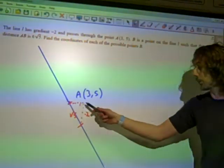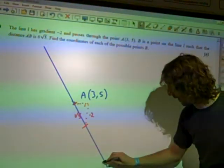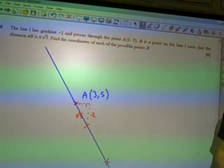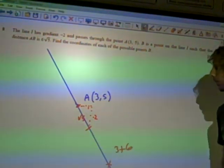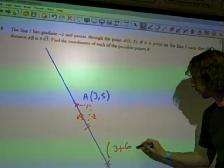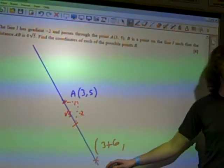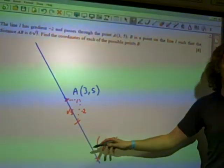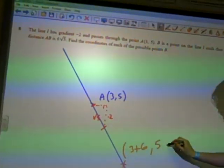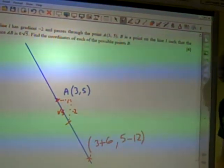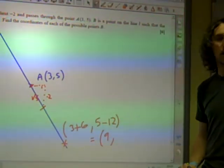So to get to the point down here, I need to go 6 units across that way. So 3 plus 6 would be the x value. And as I go 6 units across, I'm going to go 12 units down, because every one unit across I'm going 2 down. So if I'm going 6 across, I'm going 12 down. I'm going 5 take away 12. So that point is the point (9, minus 7).